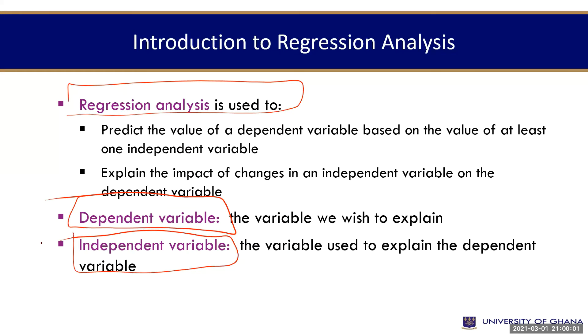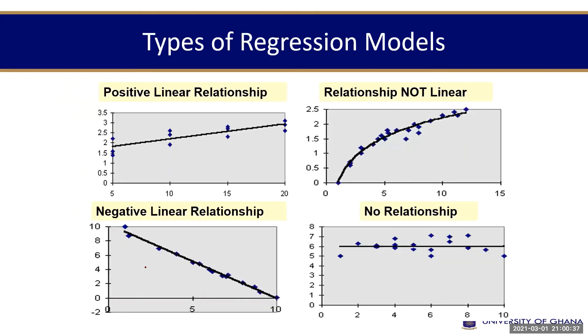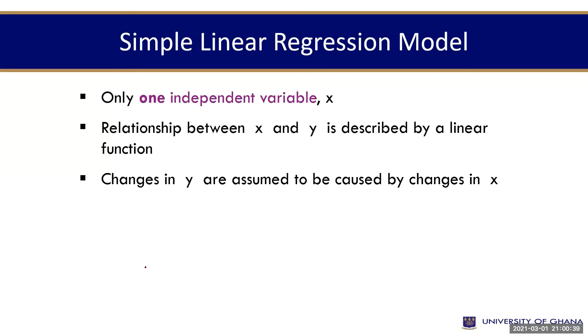We need to know dependent variable and independent variable. Dependent variable is the variable we wish to explain. The independent variable is the variable that is used to explain the dependent variable. Which one depends on the other? Profitability depends on the working capital. In this case, we'll say that profitability is the dependent variable. Then, you may have several other variables. And that one, we can go further to estimate.